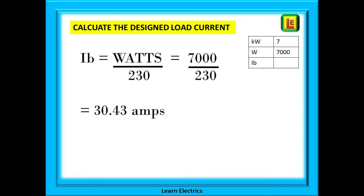First we will calculate IB, the design current. At Learn Electrics we encourage people to make a small chart on the right of the page and fill it in with all the information they have as they come across it. We know that the load is 7 kilowatts, which is the same as 7000 watts. Dividing 7000 by 230 volts gives us 30.43 amps. This is the design current — put that in the chart, as we will need this number later.